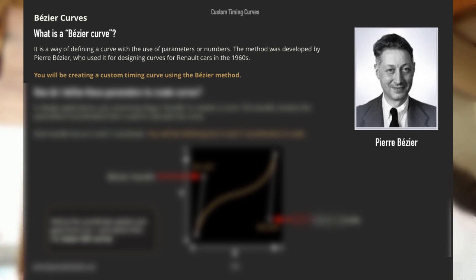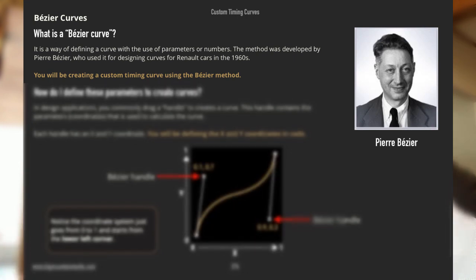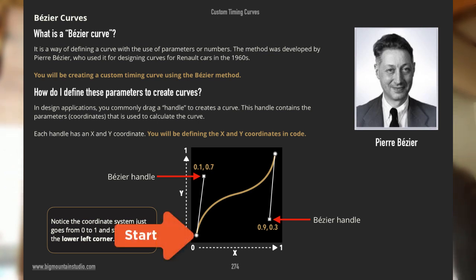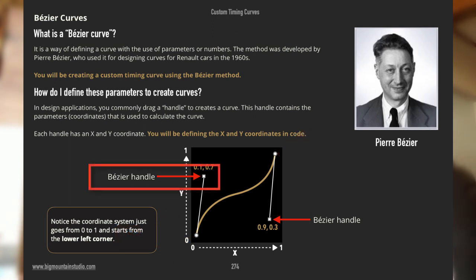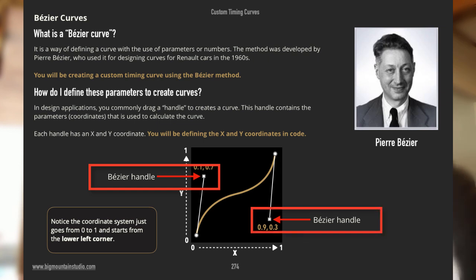How do you do that in SwiftUI? Well, you have this timing curve that has a set start and end point, and all you have to do is give the coordinates for that first Bezier handle and the second Bezier handle. And it's that simple — it'll produce a curve.